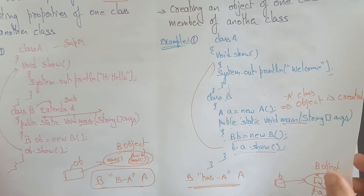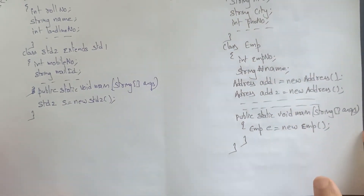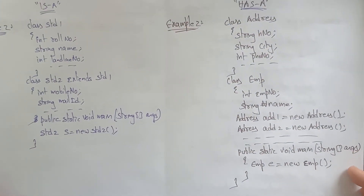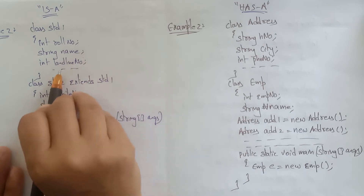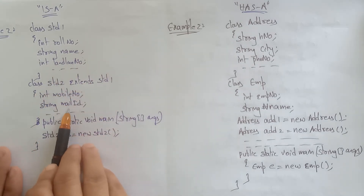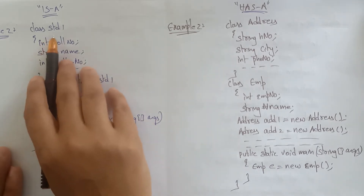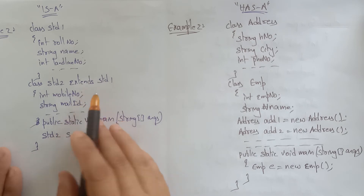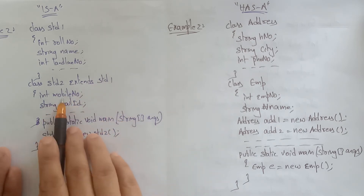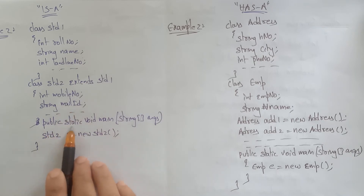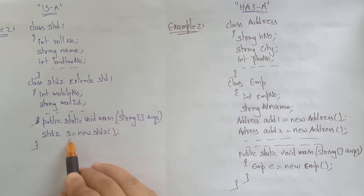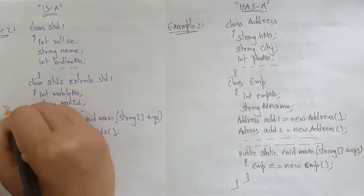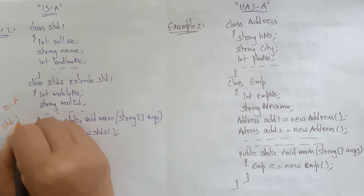Let's take one more example. Student1 has role number, name, and landline number. Student2 has mobile number and mail ID. Student2 extends Student1, so it acquires all the properties of Student1 as well. In the main method, a Student2 object is created.